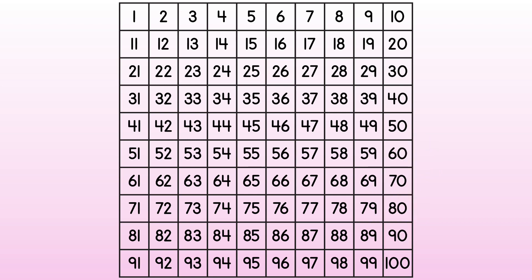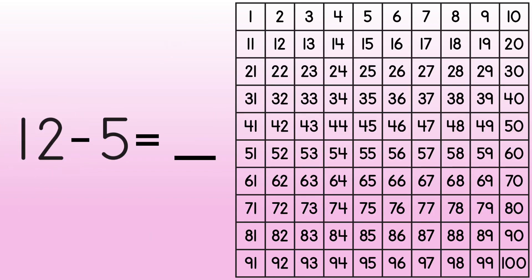Let's start with a basic fact like 12 minus 5 equals blank. When we subtract using a hundreds chart, we start at the first number in the subtraction sentence. This number is called the minuend. Find the minuend. The minuend in this subtraction sentence is 12. Find 12 on the hundreds chart.